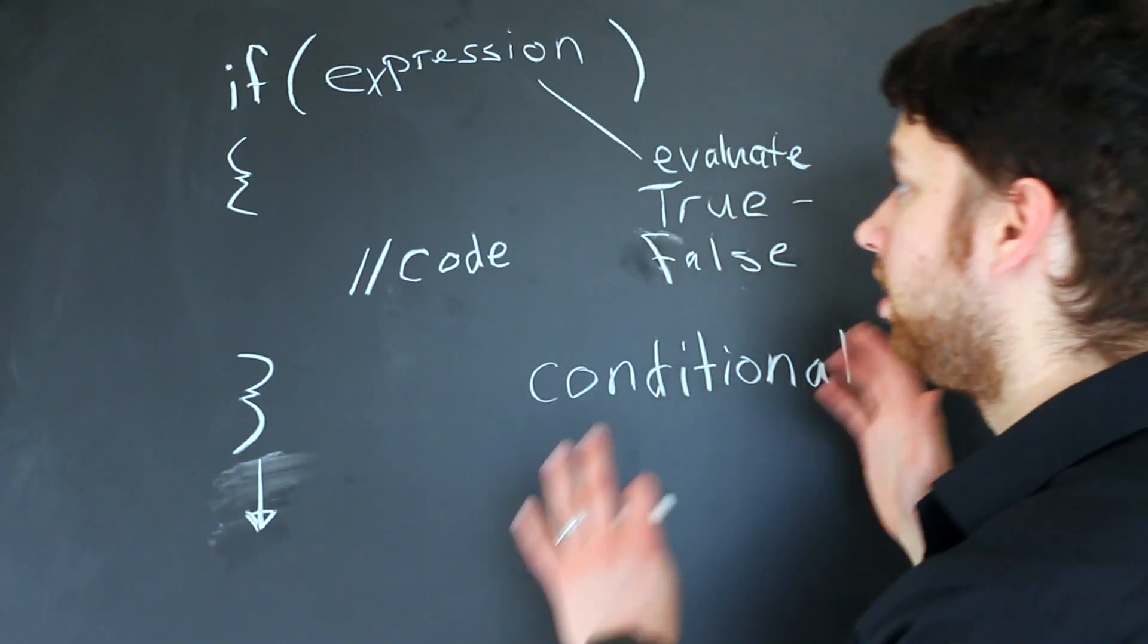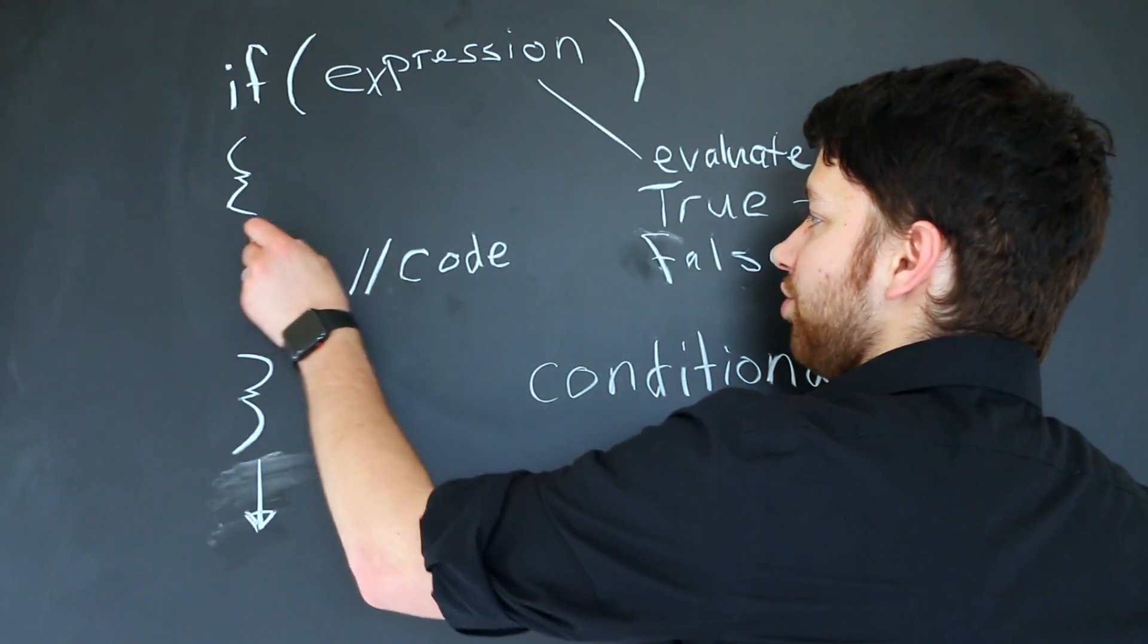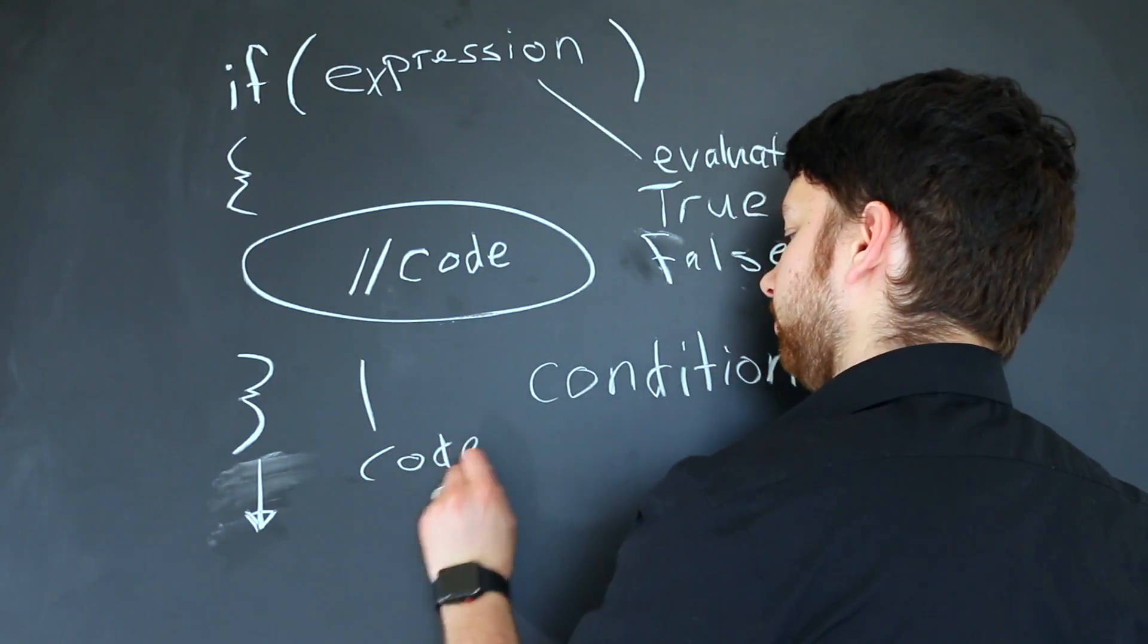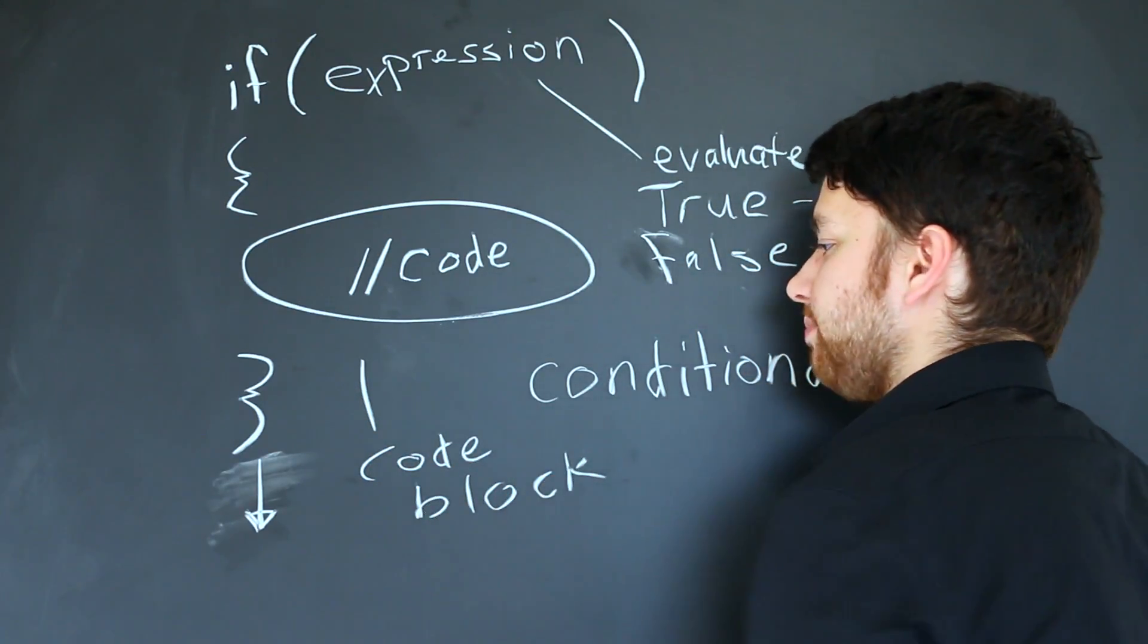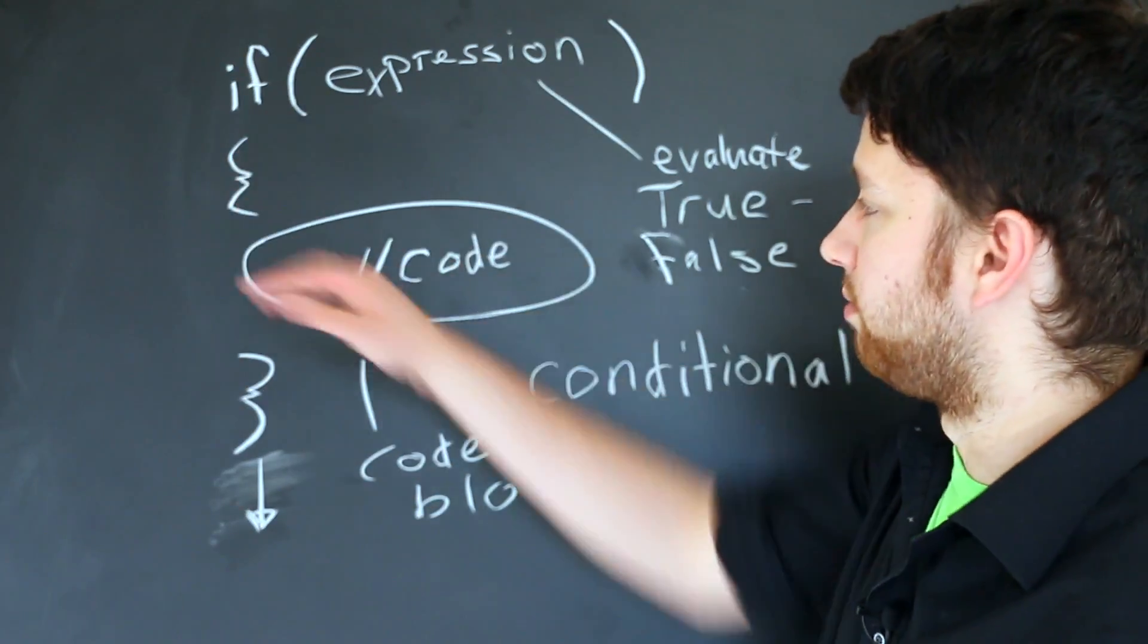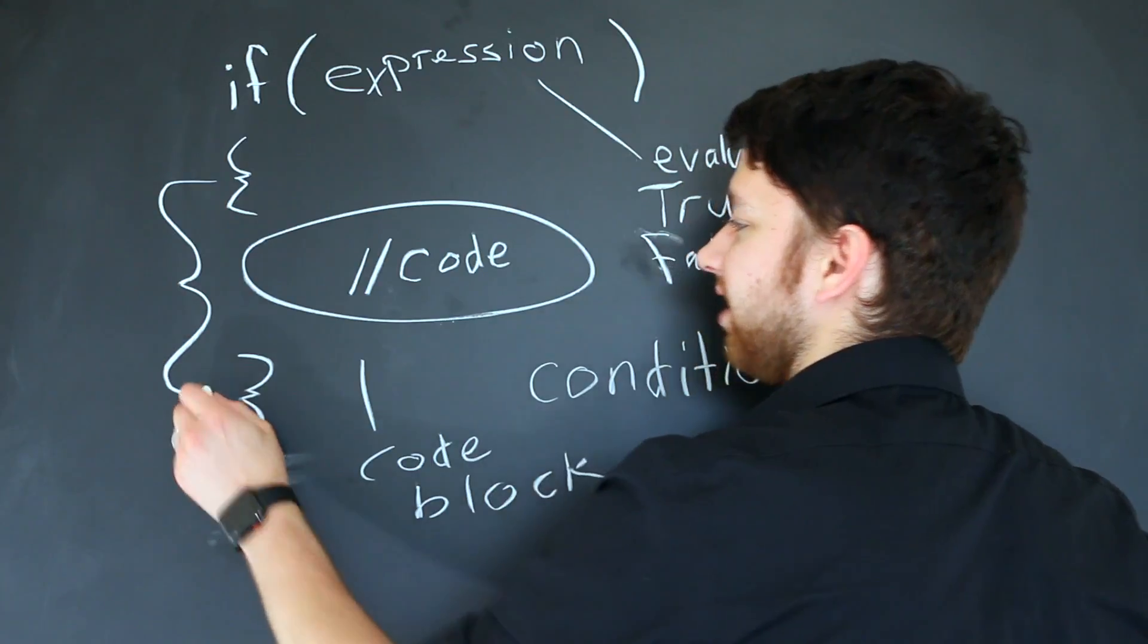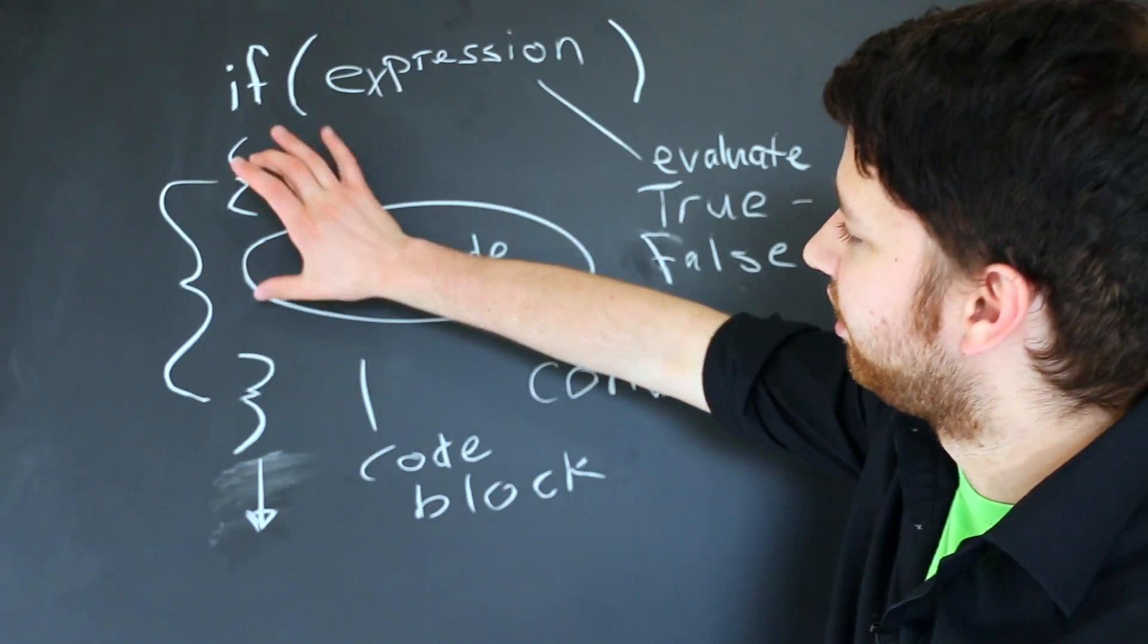Some people call this section of code a code block. The reason it's called a code block is because it's within these curly braces. This here is often the start of a code block.